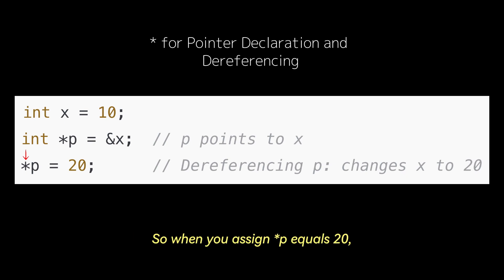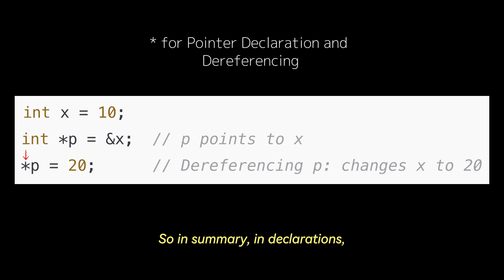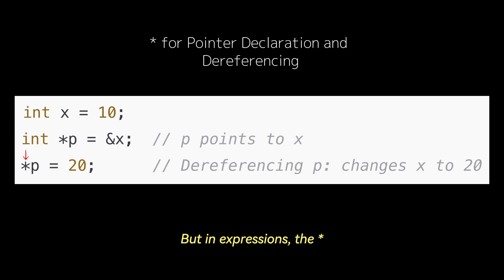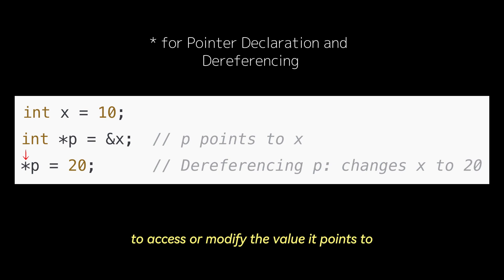So when you assign asterisk p equals 20, it modifies the value of x. In summary: in declarations, the asterisk defines a pointer type. But in expressions, the asterisk dereferences a pointer to access or modify the value it points to.